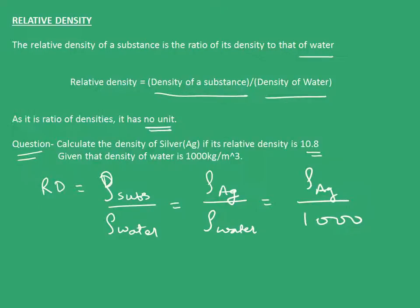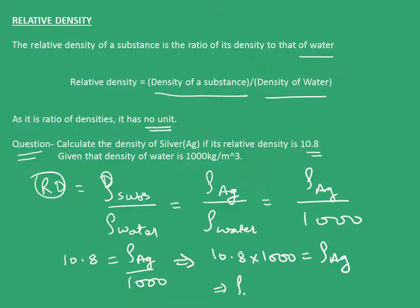We write ρ_Ag/ρ_water, which is ρ_Ag/1000. The relative density given is 10.8, so 10.8 = ρ_Ag/1000. This implies 10.8 × 1000 = ρ_Ag, which means ρ_Ag = 10,800 kg/m³. Hence we can see that the density of silver is much more than that of water. With this, I end the chapter on gravitation. Thank you.